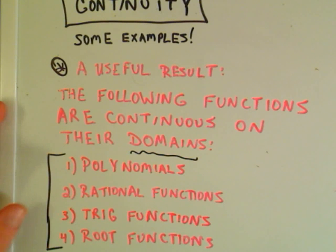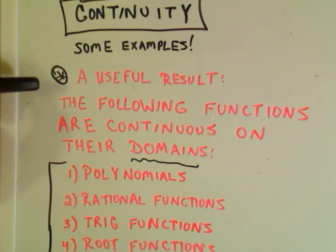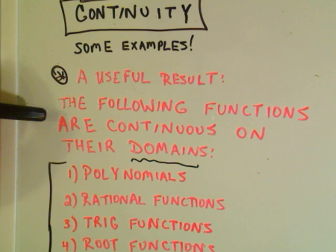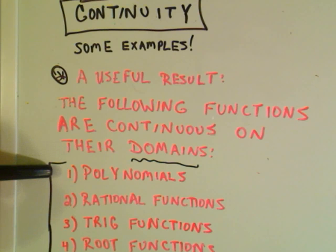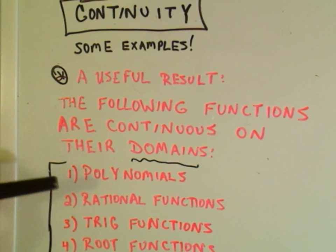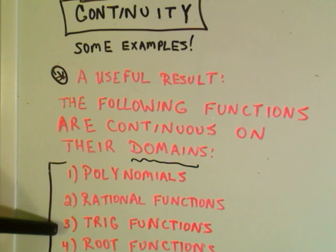In this video we're going to do some actual continuity examples, and a little result I forgot to put in the last video: these functions are continuous on their domains — not everywhere, just on their domains. The ones we're going to talk about are polynomials, rational functions, trig functions, and root functions.